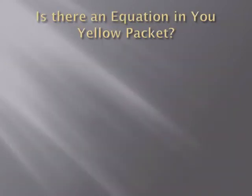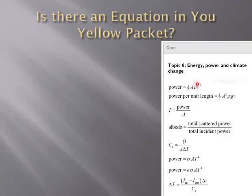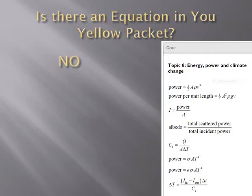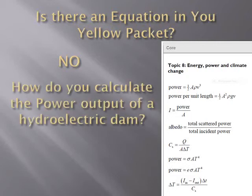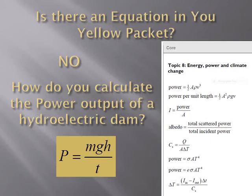There's no specific hydroelectric dam equation in the yellow packet. To find power output, you just think about where the energy is coming from — gravitational energy. Power equals change in energy per unit time, so power output equals MGH divided by time. That's the equation you use to calculate power produced by a hydroelectric dam, as long as you know where the energy is coming from.